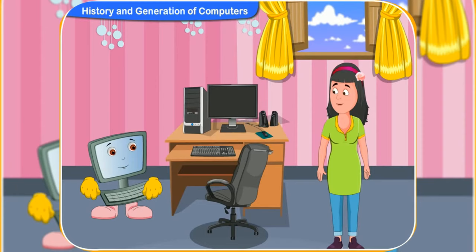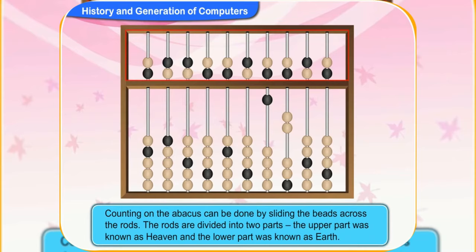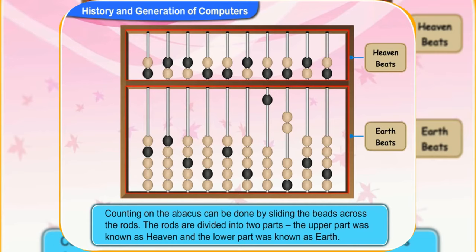Do you remember what an abacus looked like? Yes — it is made of a wooden frame with rods, each having beads. That's right. Counting on the abacus can be done by sliding these beads across the rods. The rods are divided into two parts: the upper part was known as 'heaven' and the lower part was known as 'earth'.